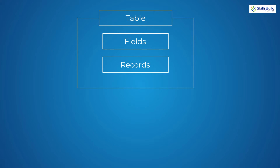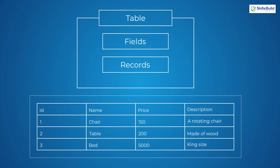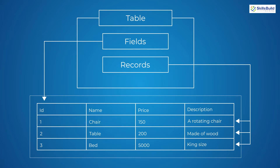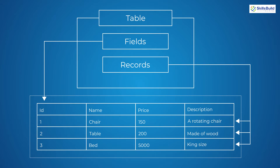Each table has some fields and each field will have some records or data in it. Here we have a table with different fields like ID, name, price, description, etc. As you can see, each field has some data — a record. For example, we have ID equals 1, name is 'chair', having a price of 150, and the description is 'rotating chair'.